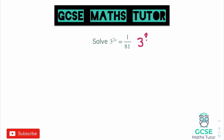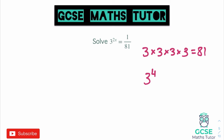Can we write the right-hand side as a power of 3? The answer is yes, because 81 is a power of 3. If you work it out: 3 times 3 is 9, times 3 is 27, times 3 is 81 — so 81 is 3 to the power of 4. But this isn't 81, it's 1 over 81. To get the reciprocal, we write it as 3 to the power of negative 4. And 3 to the power of negative 4 is indeed 1 over 81.